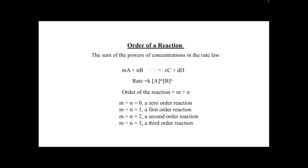Now let's start with another important term about chemical reactions: the order of the reaction. For a chemical reaction, the order is the summation of the powers of the concentrations present in the rate law. So we need to calculate the rate law and then calculate the order of the reaction by summing M plus N.